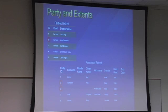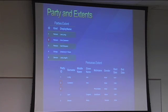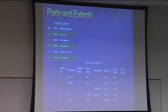Here's the extent. Here's an example of the persona extent that hooks onto the party. We have your name — all the things that go together to make a name — and the things that go together to make other personal information: your gender, your birth date, and things like that.